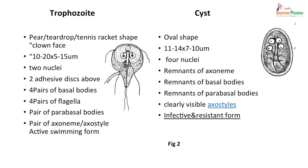Giardia has two morphological forms in its life cycle: the trophozoite and the cyst. The trophozoite is pear- or tennis-racket-shaped with a clown-faced appearance, measuring 10–25 by 5–15 microns. The cyst is oval-shaped and smaller, measuring 11–14 by 7–10 microns. The trophozoite has 2 nuclei with condensed chromosomal material in the centre giving a clown-eyes appearance, while the cyst has 4 nuclei.